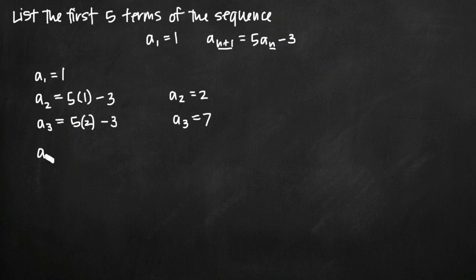And we just keep going like this until we have the first 5 terms of our sequence. So a₄ will be 5 times the previous value 7 minus 3. That'll give us 35 minus 3 or a₄ = 32.